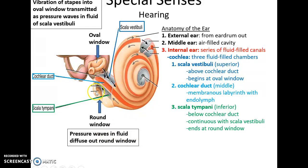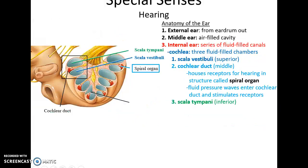The scala tympani ends with the round window, so any pressure wave still traveling through the scala tympani will dissipate out of the round window. The vibrations enter via the oval window into the scala vestibuli and exit from the scala tympani through the round window. Within the cochlear duct is the structure for hearing — a long structure called the spiral organ that spirals up the cochlea — stimulated by fluid pressure waves to allow us to detect sound.